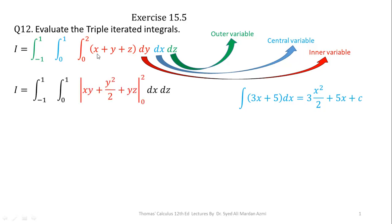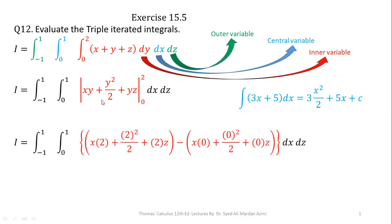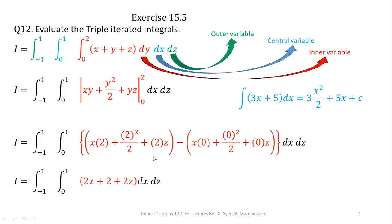So the integration of x is xy with respect to y, the integration of y is y squared over 2 with respect to y, and the integration of z is yz with respect to y, for the limit 0 to 2. In the next step, we apply the Fundamental Theorem of Calculus — upper limit minus lower limit. For the upper limit we replace y with 2, and for the lower limit we replace y with 0. After simplification, the second bracket becomes 0, and we are left with 2x plus 2 plus 2z, completing integration with respect to y.